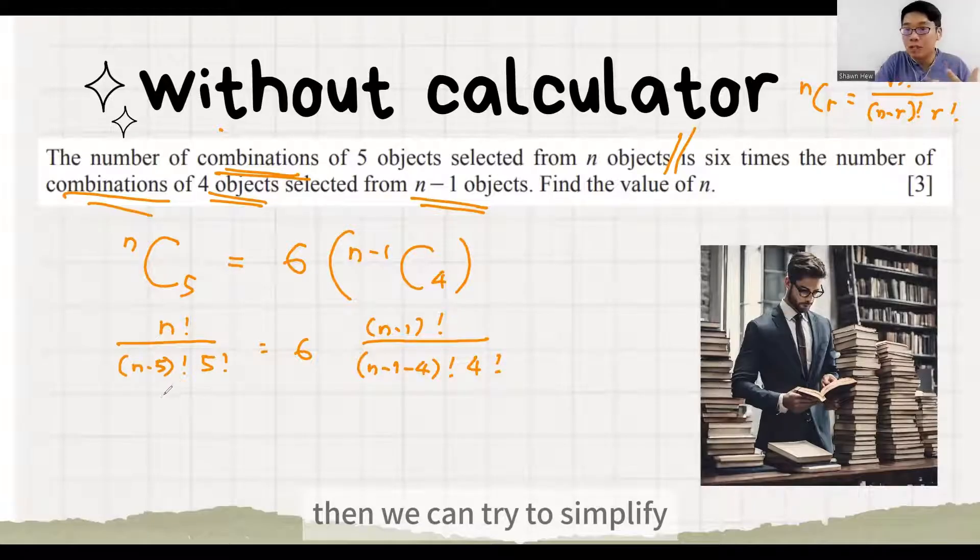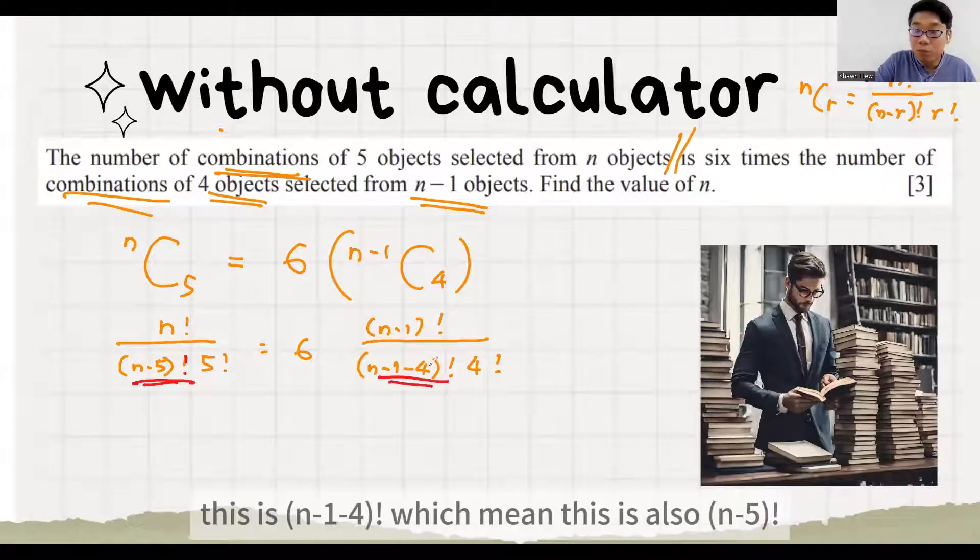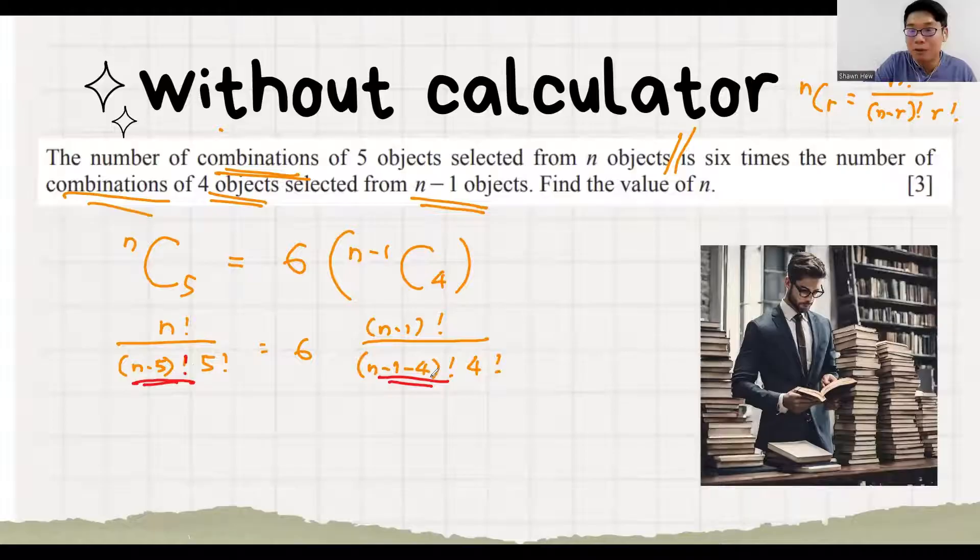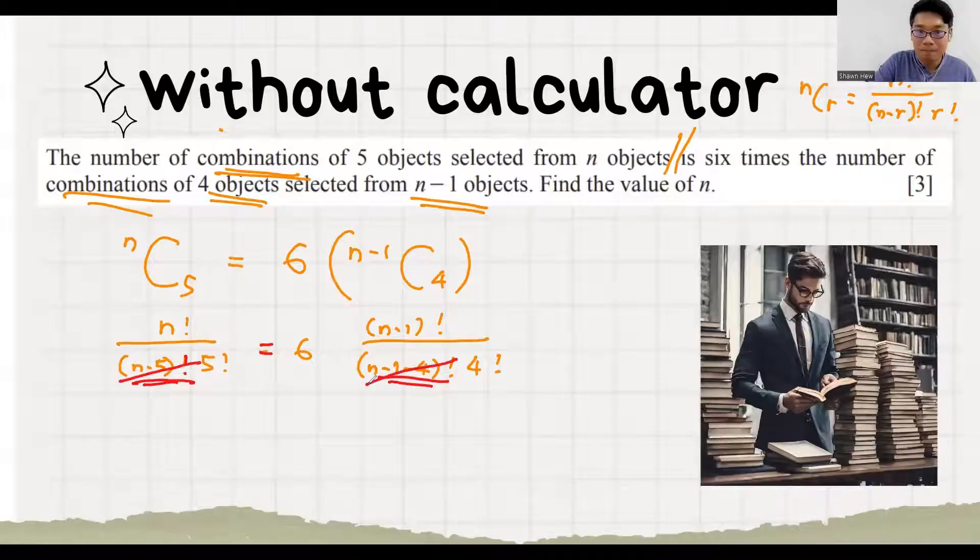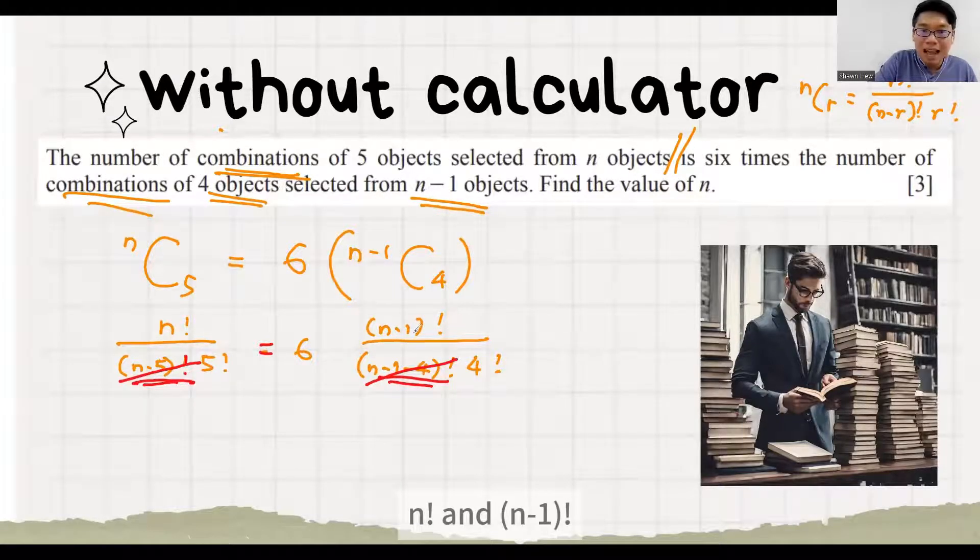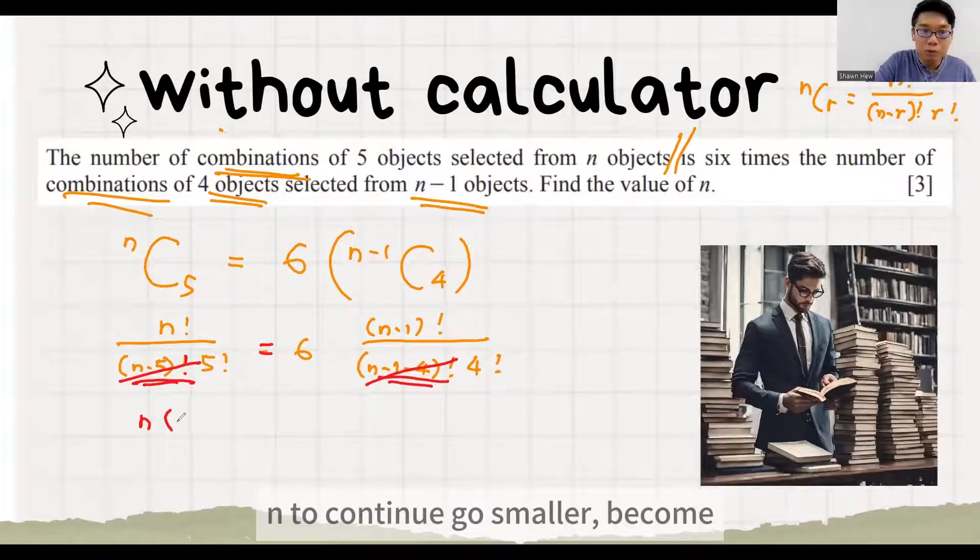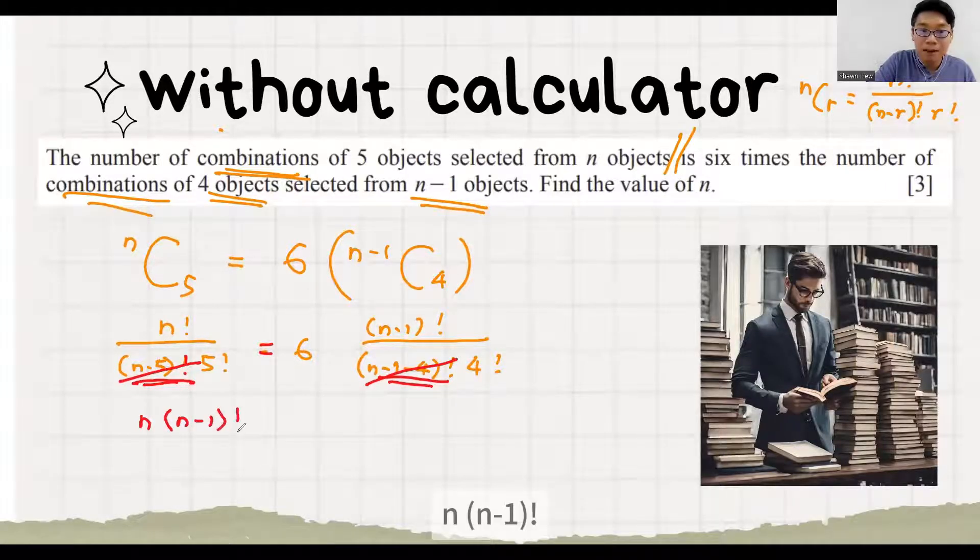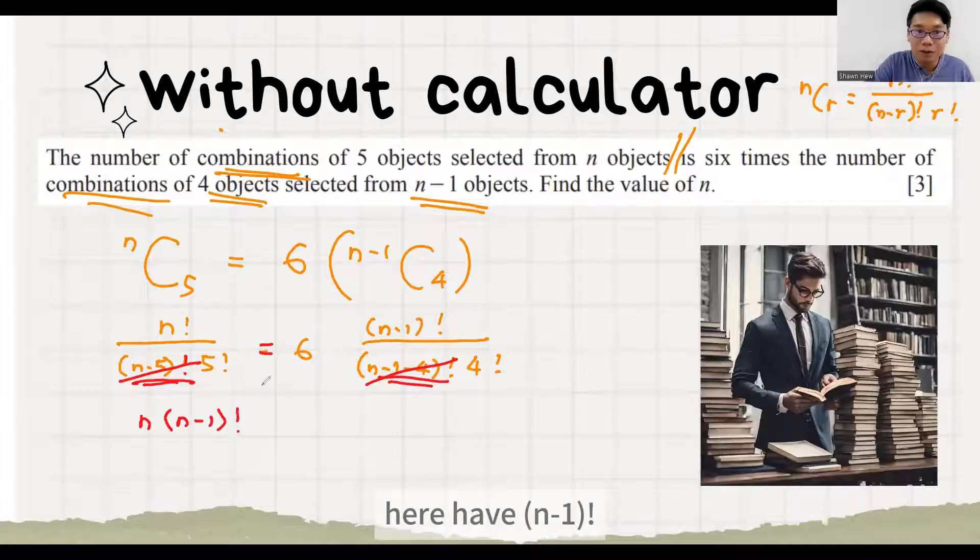Then we can try to simplify. This is n minus 5 factorial. This is n minus 1 minus 4, which means this is also n minus 5 factorial. So if one left, one right of the equal sign, then you can cut. So next we need to simplify n factorial and n minus 1. How can we continue to simplify? n factorial and n minus 1 factorial. We see which one larger. n is larger, right? So we use n to continue go smaller, become n minus 1 factorial. We stop at n minus 1 factorial because here we have n minus 1 factorial. So later we can simplify.